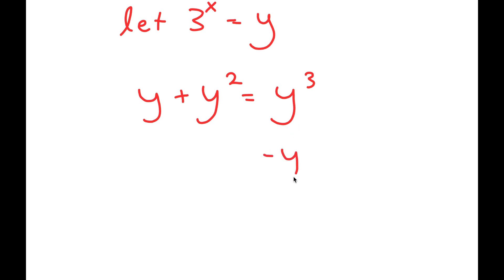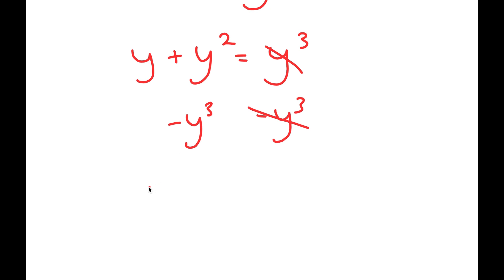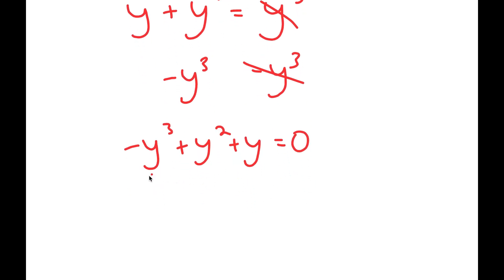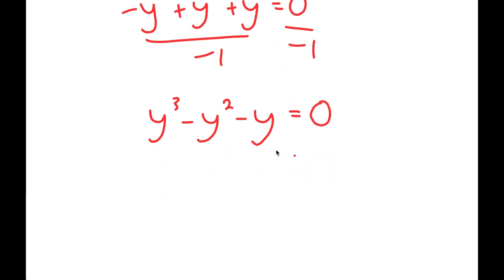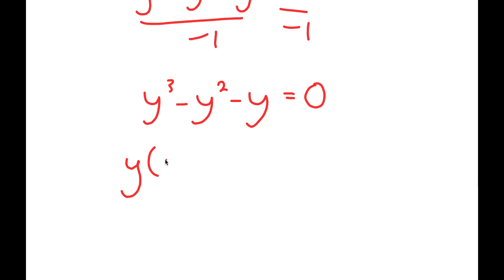I'm going to subtract y to the power of 3 on both sides, so I get negative y cubed plus y squared plus y is equal to 0. Dividing both sides by negative 1 gives y cubed minus y squared minus y is equal to 0. Factoring out y, I get y times y squared minus y minus 1 is equal to 0.